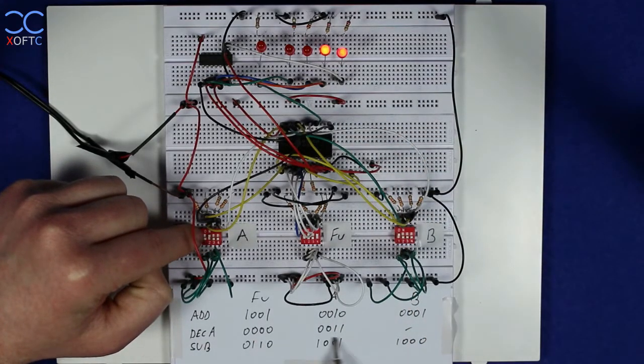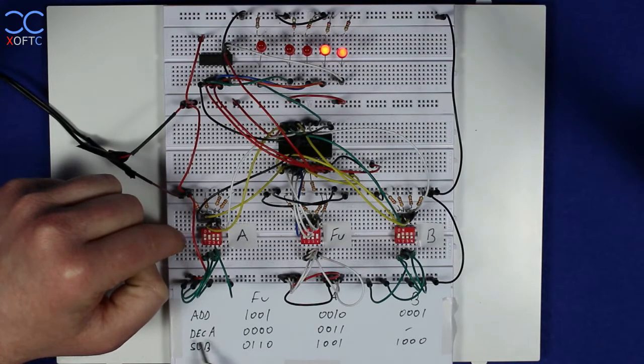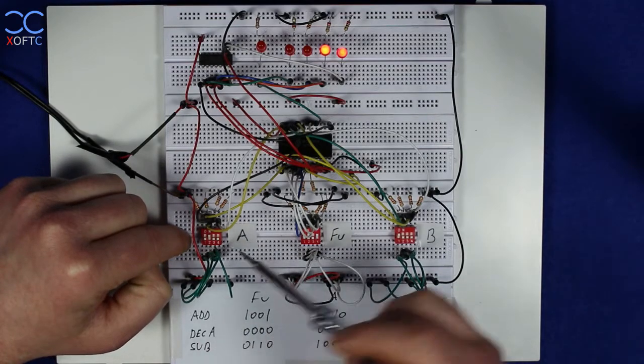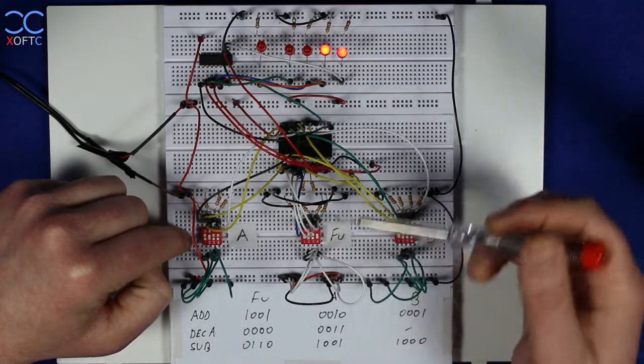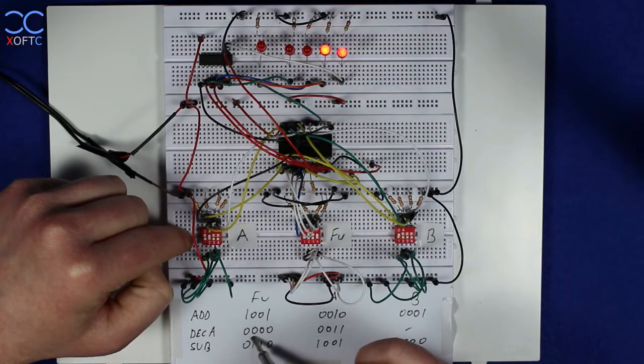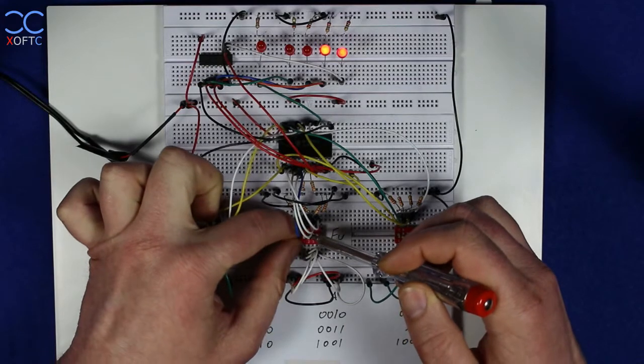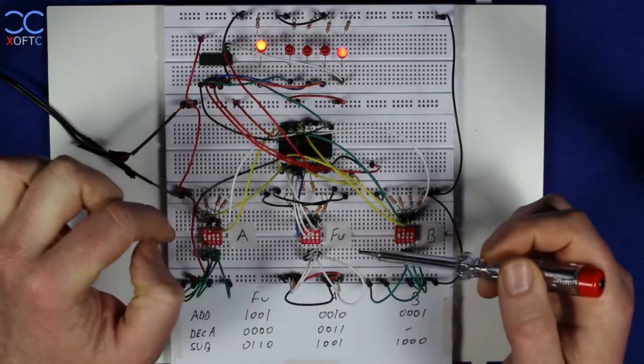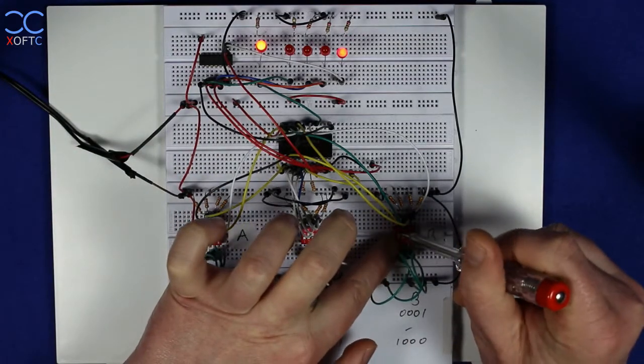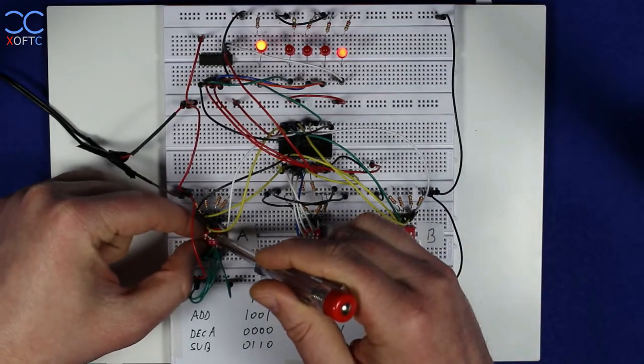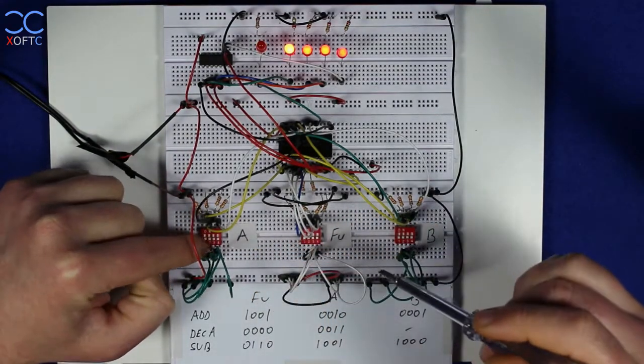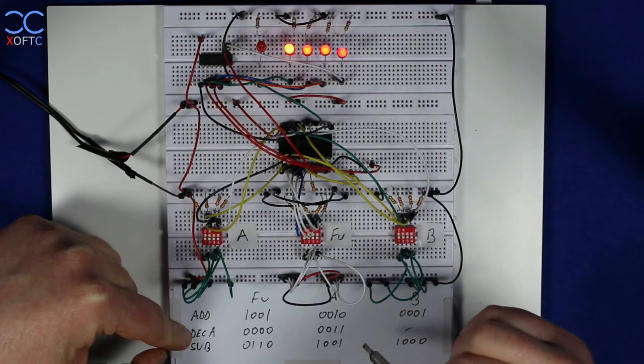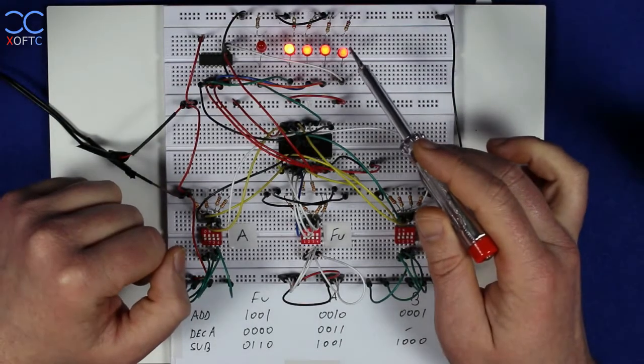The next line that we're going to look at is a decrease A. So, this line will decrease A by 1. So, it's A minus 1, actually. So, first of all, we're going to set our function to decrease A by 1. And that means that all the pins on the function switch needs to be low. And we're going to lower B because it's insignificant. And we're going to lower A as well. So, right now, we have 0 on A. And we are carrying out A minus 1. And what we get here is a minus 1 in binary. This is a minus 1.